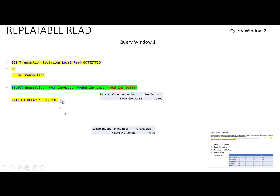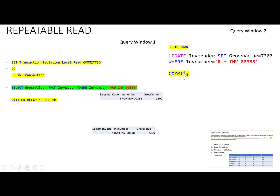The transaction is still going on and there is a delay. Meanwhile, another user updates the table: UPDATE invoice header SET gross value = 730 WHERE invoice number is this. During the first transaction, the first user runs the same SELECT statement a second time. The first time it returned one value, but after the other user's update, the second SELECT returns a different value. The statement is the same and the parameters are the same, but the results are different — this is the non-repeatable read concurrency problem.